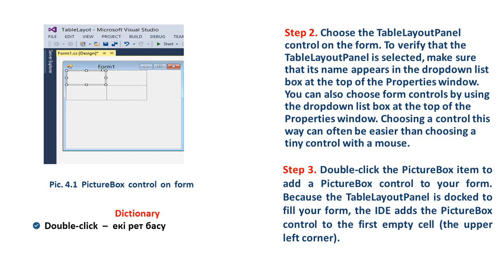Step 2: Choose the table layout panel control on the form. To verify that the table layout panel is selected, make sure that its name appears in the drop-down list box at the top of the properties window. You can also choose form controls by using the drop-down list box at the top of the properties window. Choosing a control this way can often be easier than choosing a tiny control with a mouse.